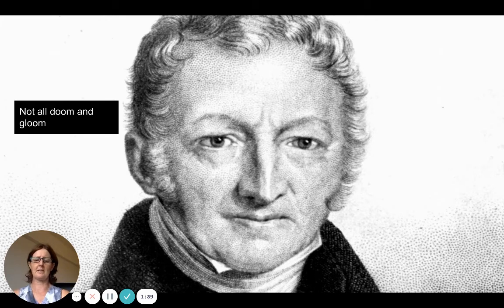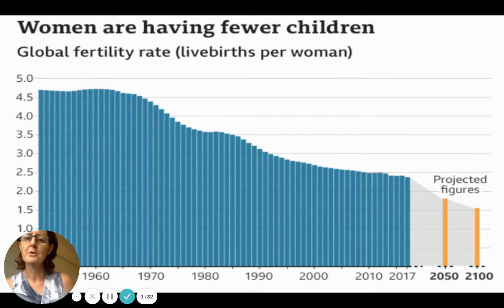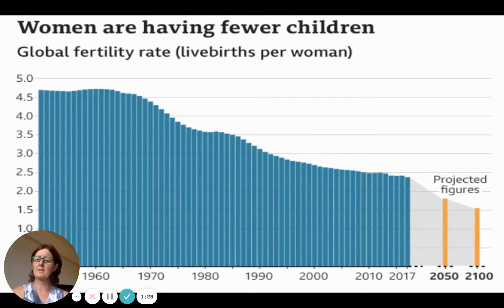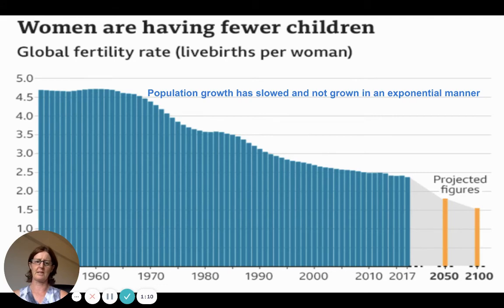Not everything was doom and gloom as he theorized in the 18th century. We don't see exponential population growth anymore in terms of his prediction. In fact, it's been the opposite — women are having careers, women are getting married later but having fewer children, and globally, fertility rates have begun to fall quite drastically. Most high-income countries are now having pro-nationalist policies as a result.